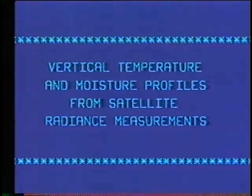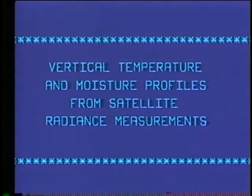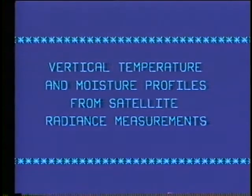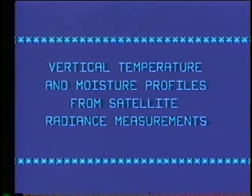This videotape examines vertical temperature and moisture profiles obtained from satellite radiance measurements. The tape is organized into five sections: an overview of current meteorological satellites, a summary of the physical processes which affect Earth radiation to space, examples of a method of solution used in transforming radiance measurements to meteorological data, a discussion of the characteristics of satellite-derived information, and two studies of satellite radiance measurements.